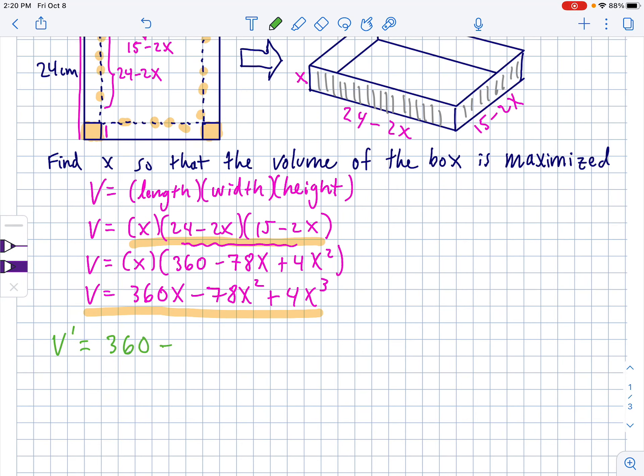So I switch colors just for fun, just for funsies. V prime is 360 minus 156x. Nope, not x squared. Come on, keep it together. The x squared goes down to power of 1, plus 12x squared. Now that's the derivative. If you set the derivative equal to zero, you will find your turning points, AKA stationary points, AKA horizontal tangents, AKA where the derivative is equal to zero. That was too many AKAs. I'm sorry.